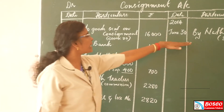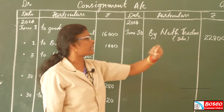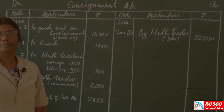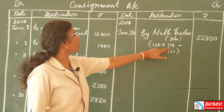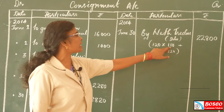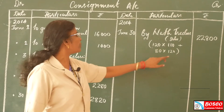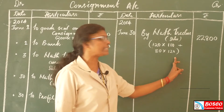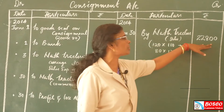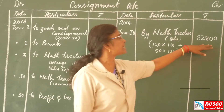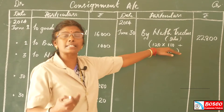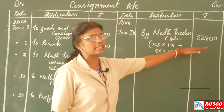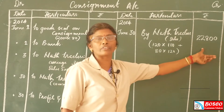Next, the sales proceeds. North Traders sold 120 kettis at Rs. 110 each, giving Rs. 13,200, and the remaining 80 kettis at Rs. 120 each, giving Rs. 9,600. The total sales amount is Rs. 22,800. In the consignment account, this is entered as: By North Traders — Rs. 22,800.